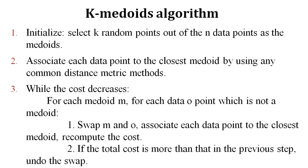Talking about the K-Medoids algorithm, there are three simple steps. First, select k random points out of the n data points — for example, from 500 data points you select k random points, called medoid points. Step two: associate each data point to the closest medoid using any common distance metric method. Similar to K-Means, we compute the distance measure and whichever value is closest to a medoid gets grouped into that cluster.